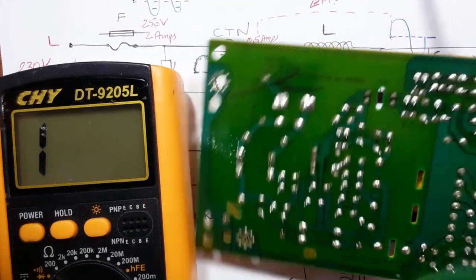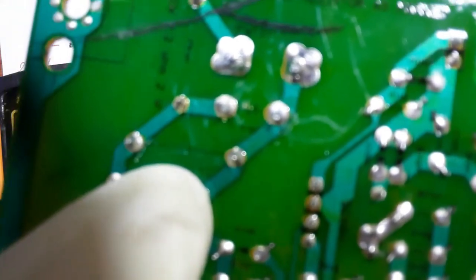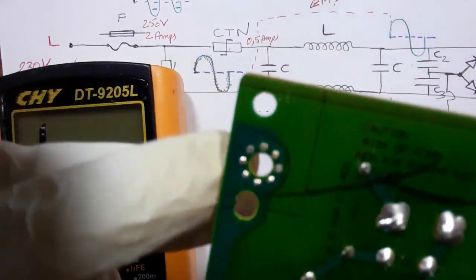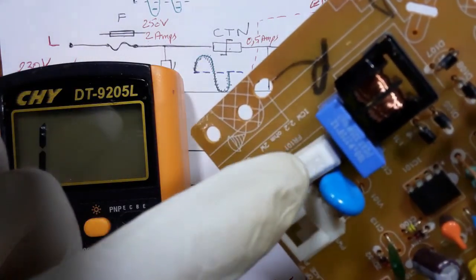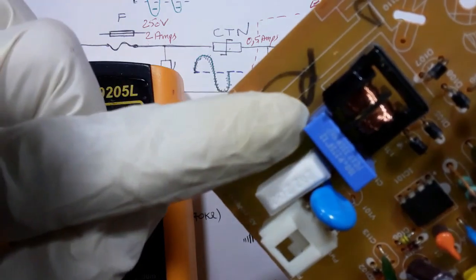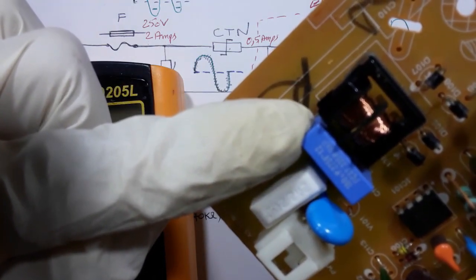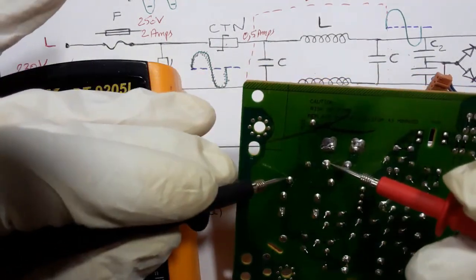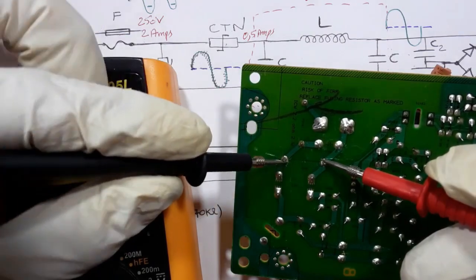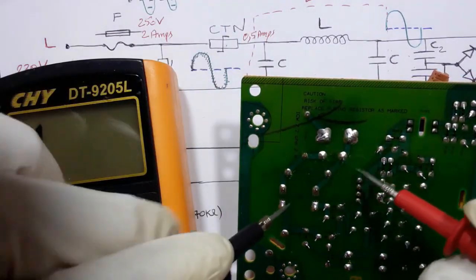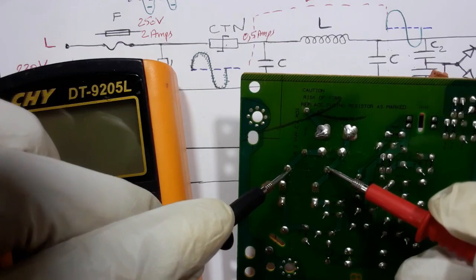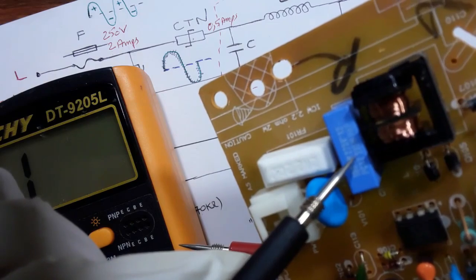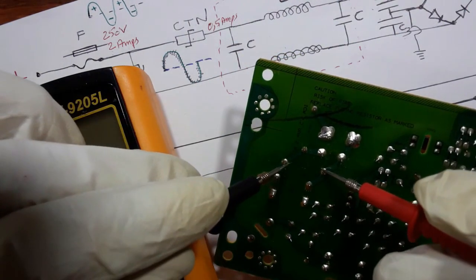One terminal of the fuse is connected to this capacitor — you can see the symbol of the capacitor here. Let's test the capacitor: if there is no continuity, the capacitor is good. If you hear a continuity when testing this capacitor, that means it's bad and should be replaced. No continuity — good.